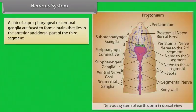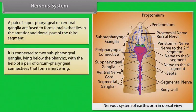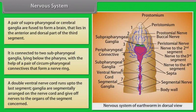A pair of suprapharyngeal or cerebral ganglia are fused to form a brain, lying in the anterior dorsal part of the third segment. It is connected to two subpharyngeal ganglia via a pair of circumpharyngeal connectives that form a nerve ring. A double ventral nerve cord runs to the last segment, with ganglia segmentally arranged on the nerve cord giving off nerves to the organs of each segment.